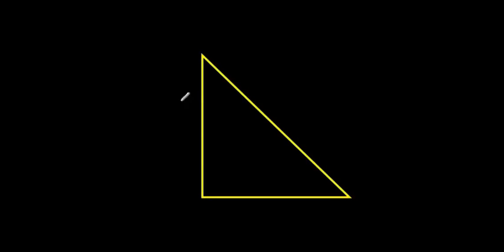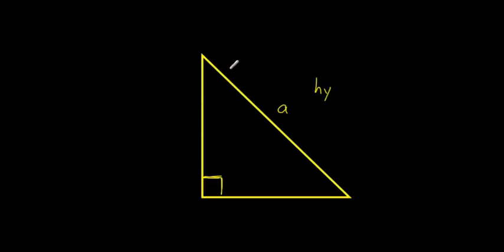This is a right angle triangle, or a right triangle. In a right angle triangle there is clearly a right angle — in this case it's here — and we always show a right angle by putting the little square in the corner. The side across from the right angle, which I'll call side A, is called the hypotenuse.